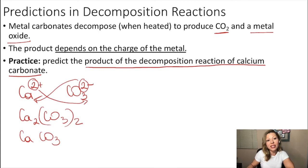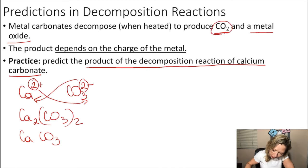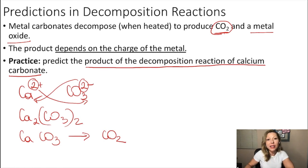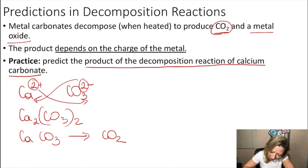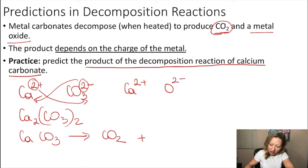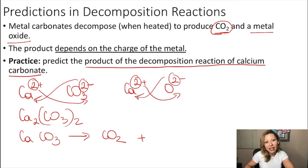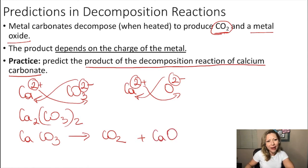Now let's figure out the products of the decomposition reaction. We know it always produces CO2 — that's straightforward. The other product is a metal oxide, so in this case it's calcium oxide, consisting of Ca2+ and O2⁻ (the oxide ion). Crossing the charges gives us CaO as the empirical formula.